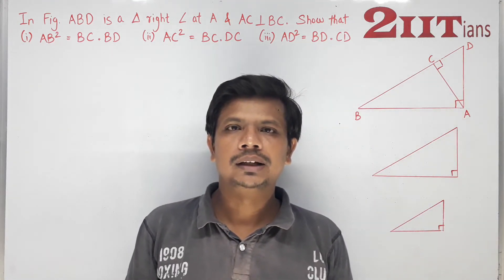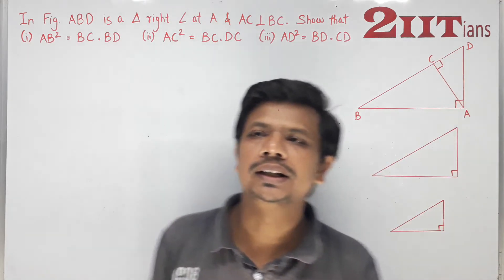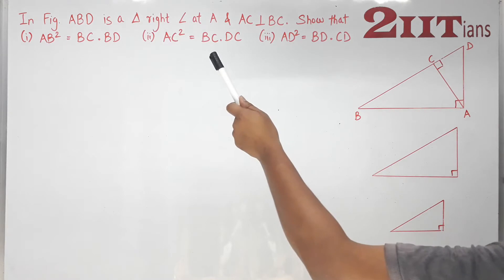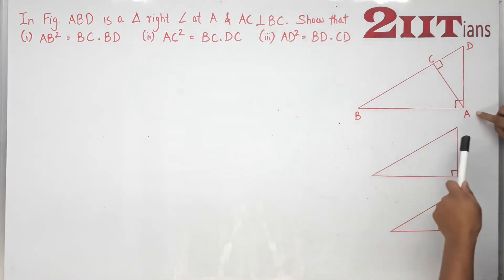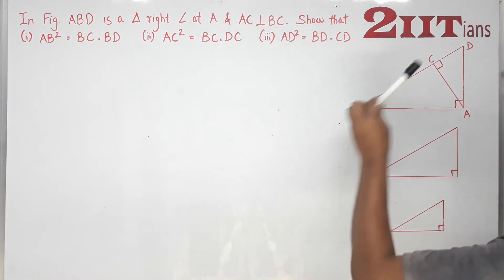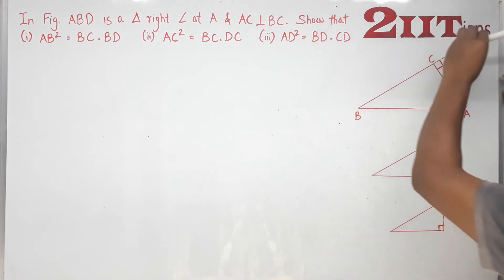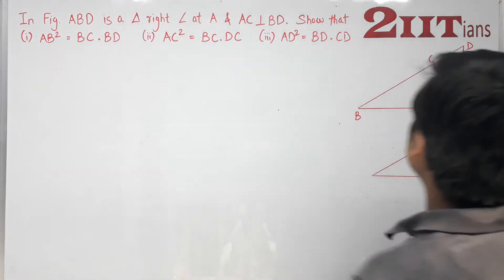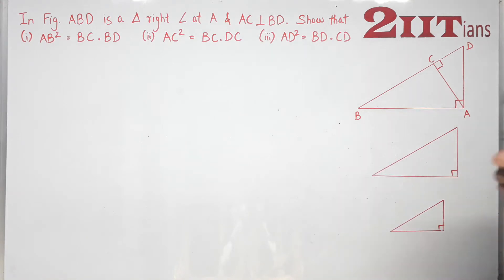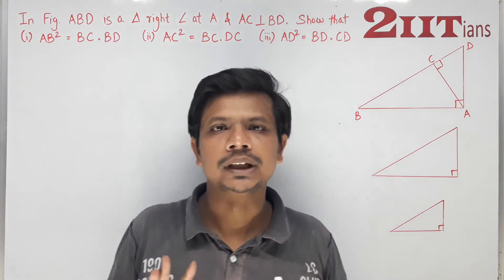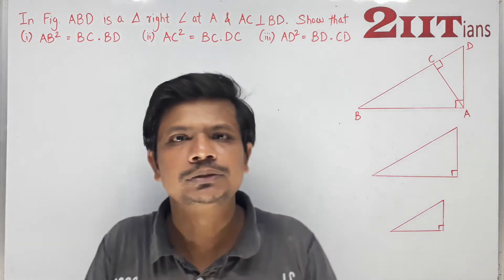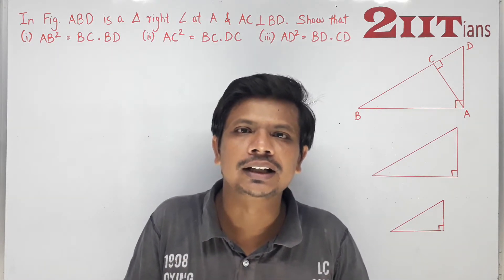Students, subscribe and press the bell icon to never miss a video from Two IITians. In figure, ABD is a right angled triangle, right angled at A. And AC is perpendicular to BD. There are three parts to be shown, and in the book there is Theorem 6.7 in NCERT. This theorem 6.7 based on NCERT has been proven using Pythagoras theorem.